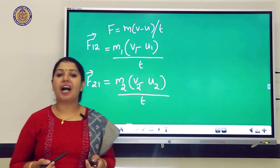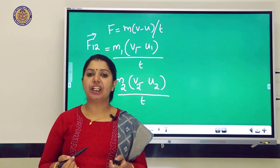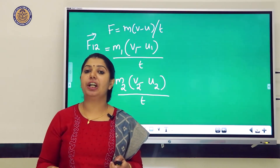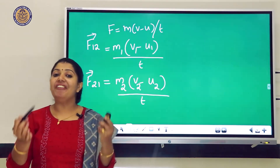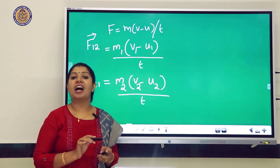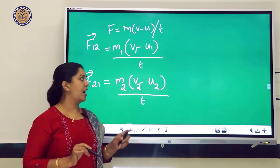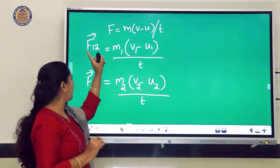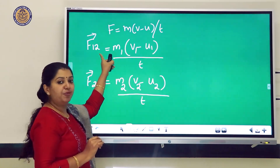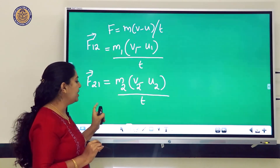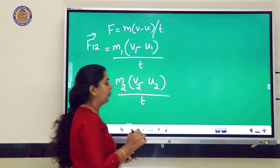Now applying Newton's Third Law: to every action, there is an equal and opposite reaction. Therefore, F₁₂ = −F₂₁.